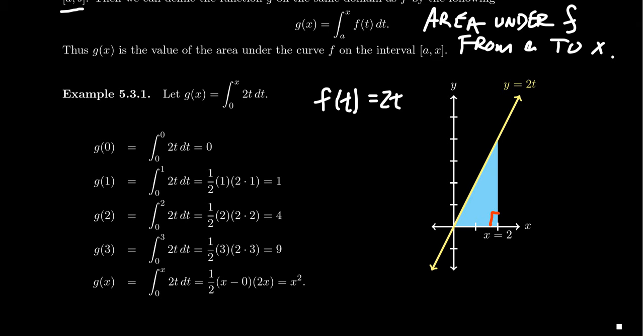If we look at the area from 0 to 0, g(0) would mean the area from 0 to 0 of your function 2t. By properties of integration, if you integrate from a number to itself, you'll always end up with 0. Geometrically, what's the area under the dot? There's nothing, just a single point. You get area of 0.